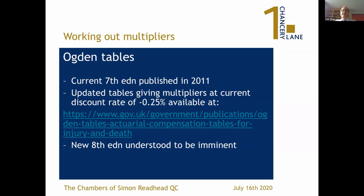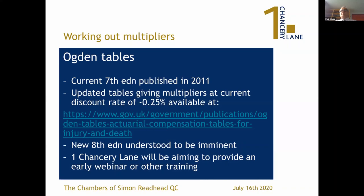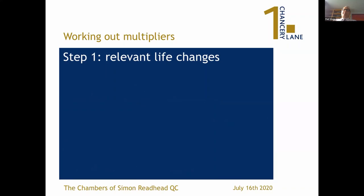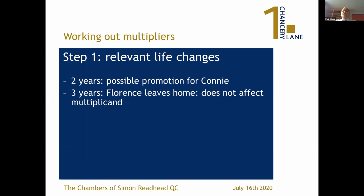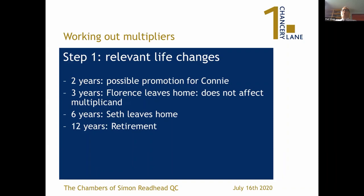For now we've got the seventh edition. When looking at dependencies and multipliers for dependencies, the first thing to do is work out the relevant life changes in the future had Connie survived. First there's the possible promotion in two years time. In three years time Florence is expected to leave home at 21, but that's not going to affect the normal calculation of the multiplier. What will make a change is when Seth leaves home - that will change the multiplier. And 12 years from trial, they will retire. So the multiplier is going to change significantly at two years, six years, and 12 years from trial.